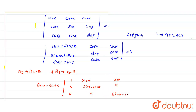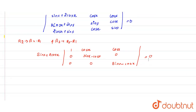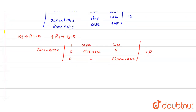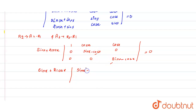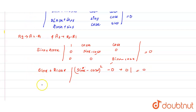Close the determinant and set it equal to zero. Now expanding with respect to the first row, we have sin x + 2cos x multiplied by the minor. This gives sin x + 2cos x times (sin x minus cos x) whole squared, minus zero terms, equal to zero.